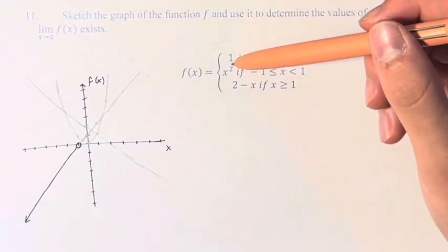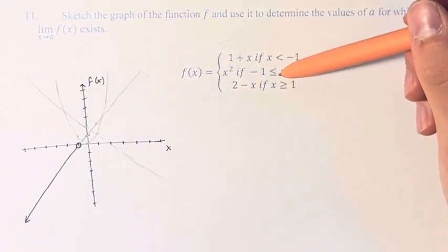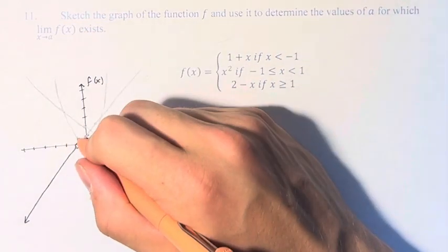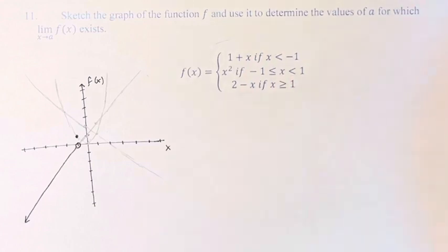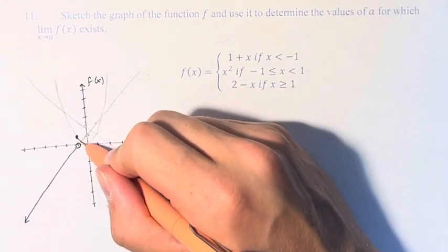The value of the function is equal to x squared if x is greater than or equal to negative 1. So the parabola here starts at negative 1, and it's solid because it's equal here. And that goes up to 1, but 1 is not inclusive.